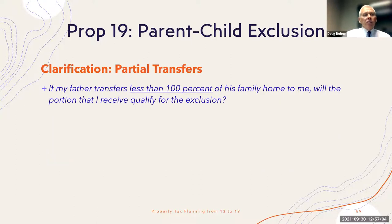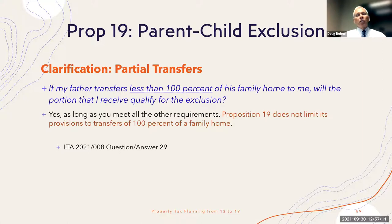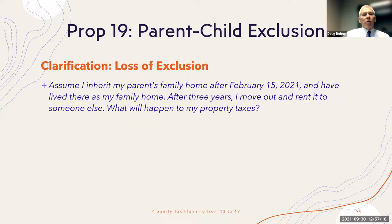Partial transfers are still possible — you can make a transfer of less than 100 percent interest. For example, a child could own a 25 percent interest, and as long as they are also treating that as their family home, it would qualify for the exclusion.